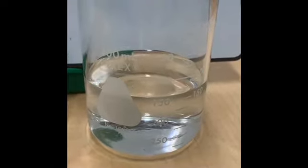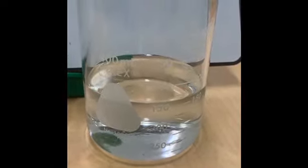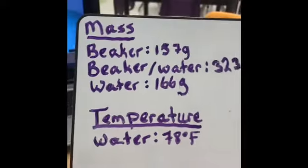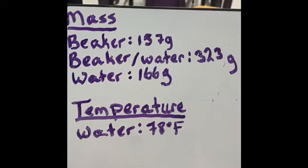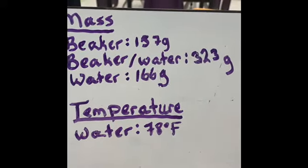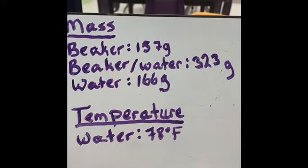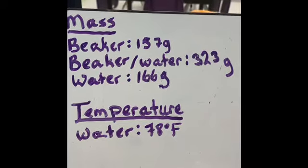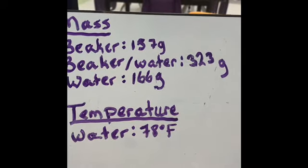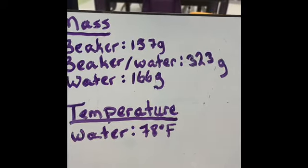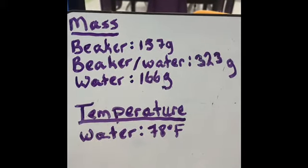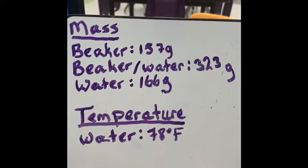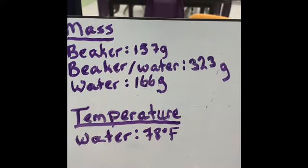This is the exact same beaker of water that we discussed in the last experiment. So let's go over the properties again. The temperature of the water is 78 degrees Fahrenheit. The shape is the same as the beaker since liquids take the shape of their containers. The total mass of the beaker of water is 323 grams and remember the beaker itself had a mass of 157 grams so the mass of the water is 166 grams.